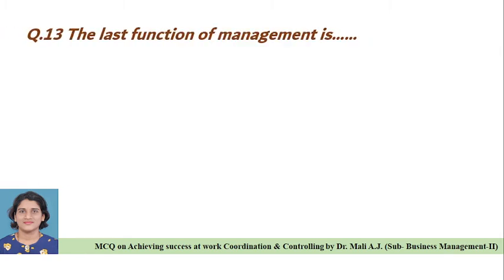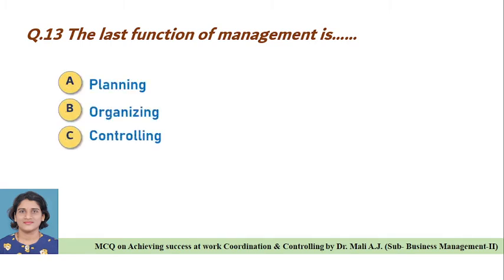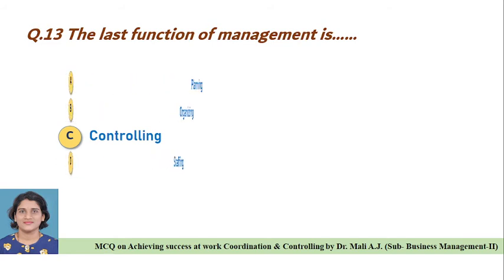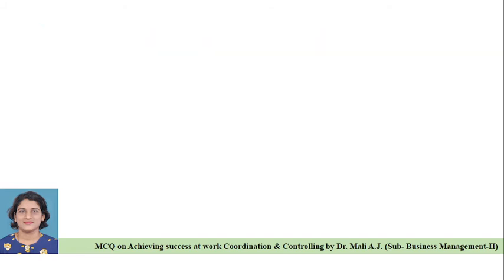Question thirteen: The last function of management is — Option A: planning, Option B: organizing, Option C: controlling, Option D: staffing. Correct answer is Option C, the last function of management is controlling.